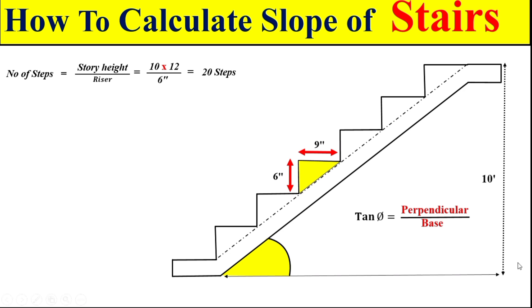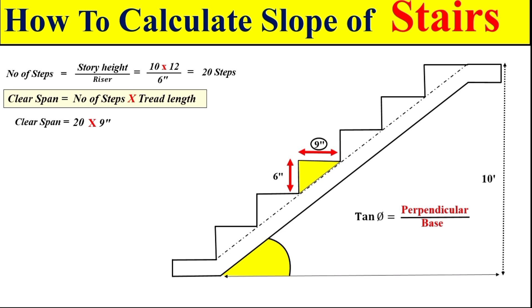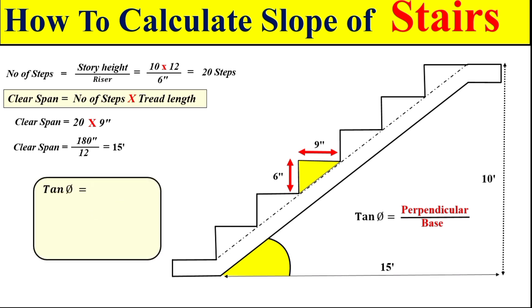Now we can easily calculate the total clear span length for the staircase, which is called the base of the stair. We take the total number of steps, which is 20, and multiply by the tread size of 9 inches. This gives us the total clear span length in inches. Dividing by 12 to convert into feet, we get a total clear span length of 15 feet.